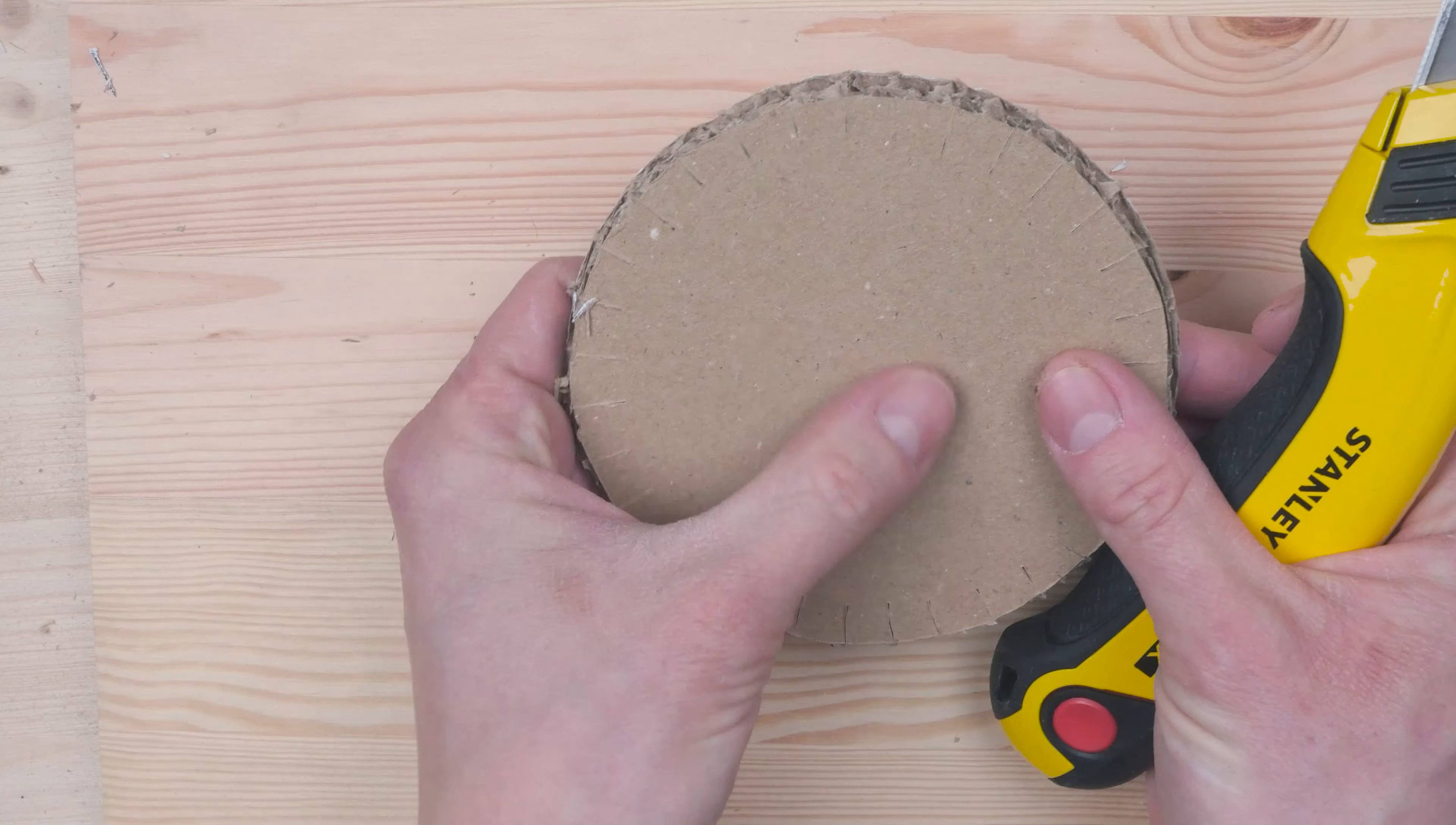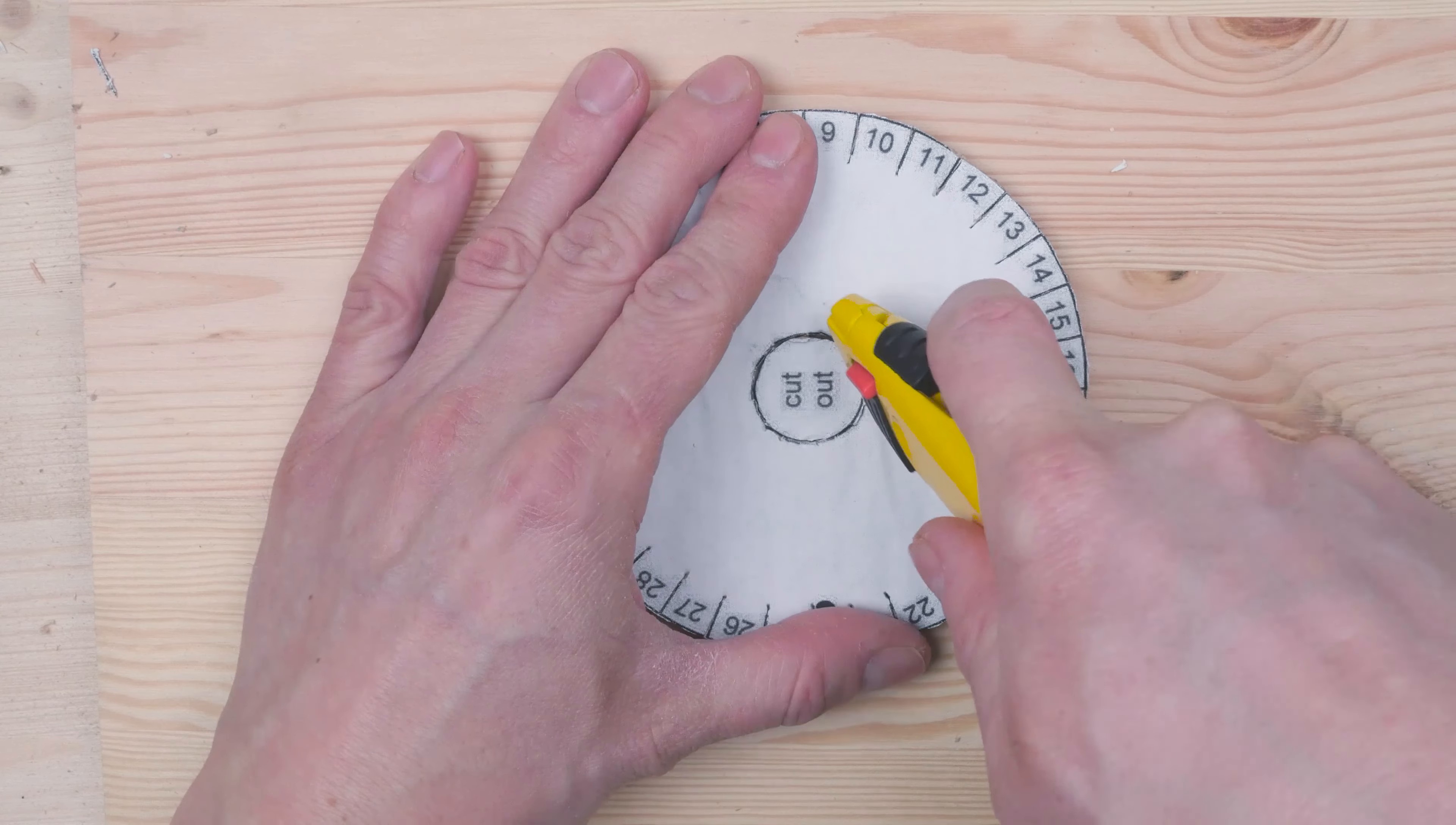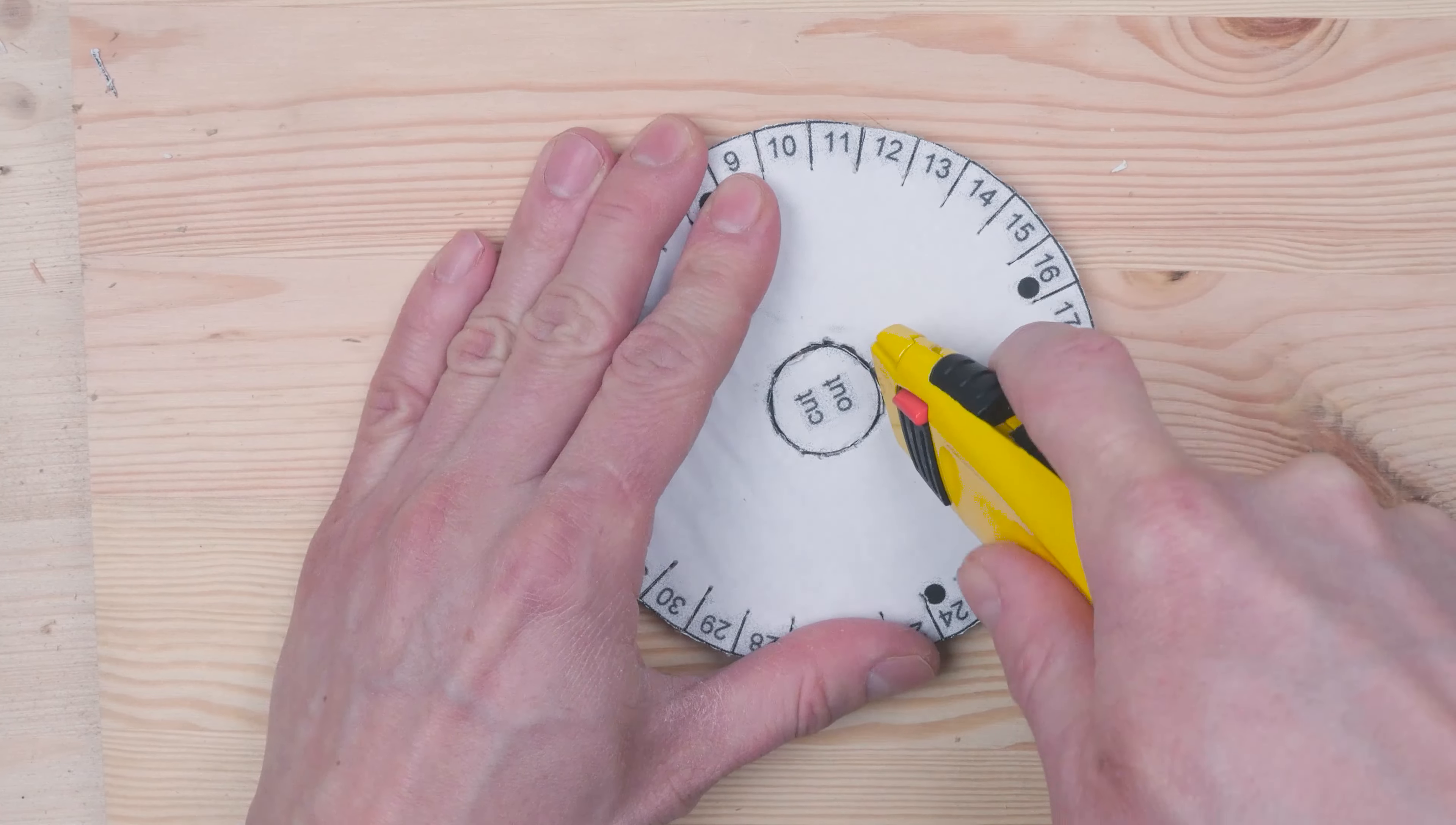After my first pass, I'm going to start connecting the stab marks, cutting out a circle.